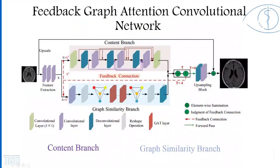The architecture of the proposed model consists of two parts. The first part is the content branch to generate high-level texture details. The second part is the graph similarity branch to explore the similarity and symmetric knowledge across MRI patches. Finally, a reconstruction step removes the artifacts and reconstructs super-resolution MRI by using the estimated patch correlation priors.